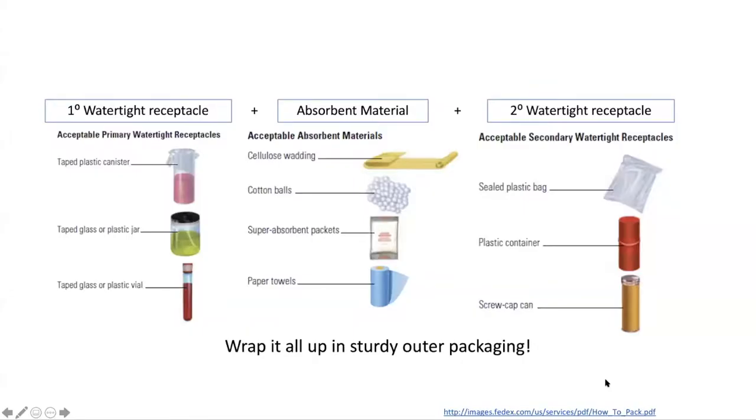There are a few key principles to keep in mind when packaging your samples. First is to make sure that the sample is contained within a primary watertight receptacle. This is most often accomplished by the sampling device itself. Next is to surround the primary receptacle with a sufficient quantity of absorbent material that if that primary container breaks, all of the liquid can be readily absorbed.